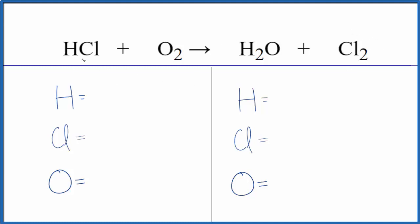Let's balance the equation. We have one hydrogen, one chlorine, and two oxygens. Product side, we have two hydrogens, two chlorines, and one oxygen atom.